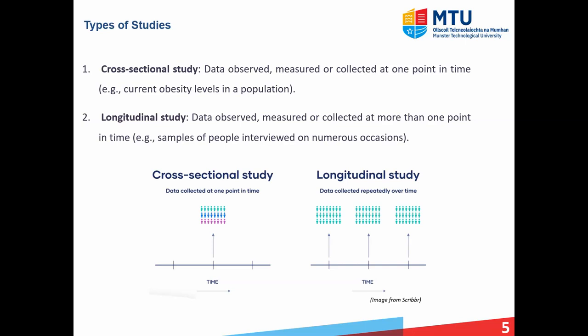Now we will consider the different types of observational and experimental studies available. Firstly, we have what's called a cross-sectional study, where some data point is observed, measured, or recorded at one point in time. For example, in the graph below on the left, we have a population and we record some characteristic of that population at one point in time, say obesity level. Next, we have a longitudinal study, which in contrast to a cross-sectional study is where some data is collected, measured, or recorded at more than one point in time. For example, we have a population and some characteristic is recorded at three different periods of time.